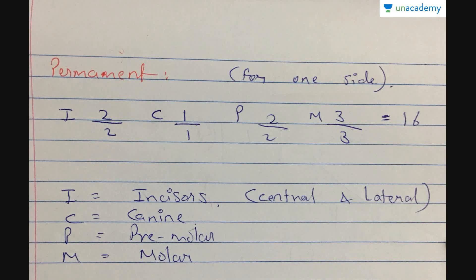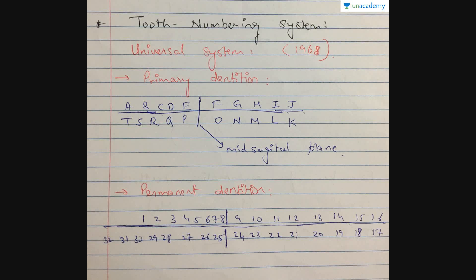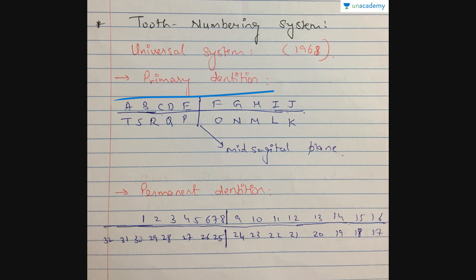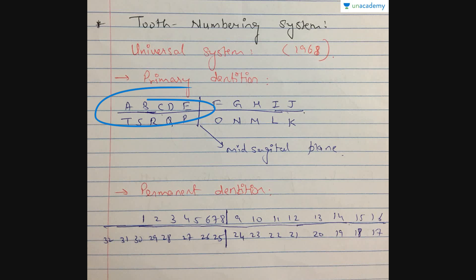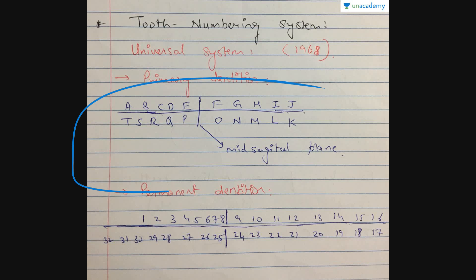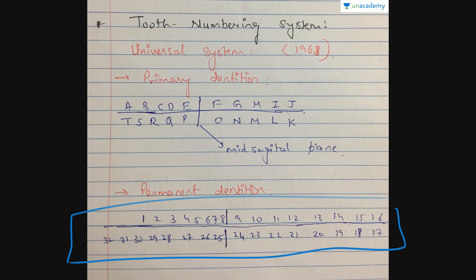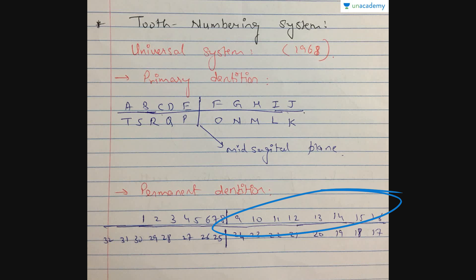Now going ahead with the tooth numbering system, starting with the Universal System, discovered in 1968. There are two sets in the Universal System: one for primary (deciduous) dentition and one for permanent dentition. In the deciduous system, starting from the mid-sagittal plane, teeth are named A to E in one quadrant, F to J in the next, K to O in the third, and P to T in the fourth.